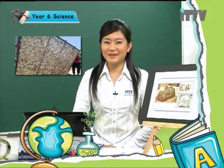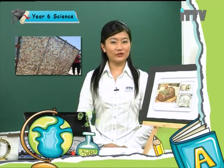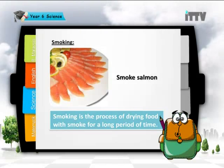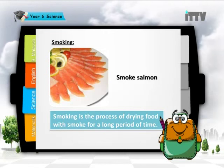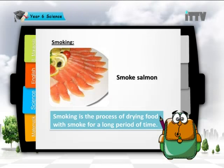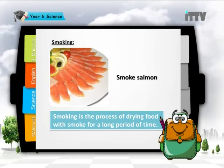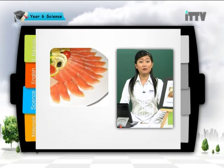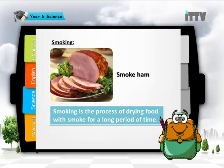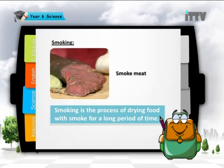The next method of food preservation is smoking. Smoking also involves the removal of water from the food. It is the process of drying food with smoke for a long period of time. Examples of smoked food include smoked salmon, smoked ham, and smoked meat.